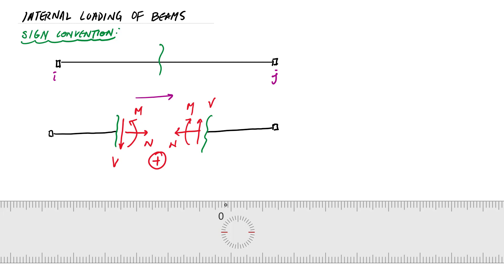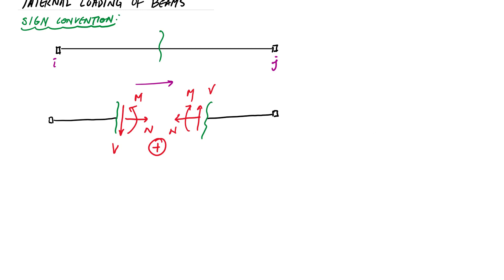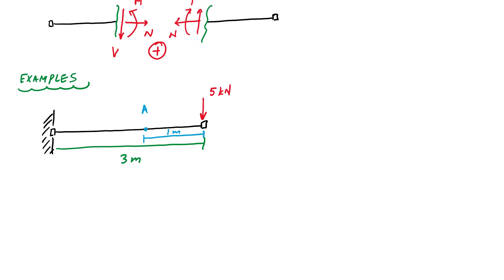Let's do some examples. When we calculate internal loads we're trying to figure out, due to the external loads, what's the internal loading in the beam. I have this cantilever beam and I want to find the internal load one meter away from the free end. We first calculate the support reactions. At the fixed end I have a vertical support, a horizontal support, and a moment.